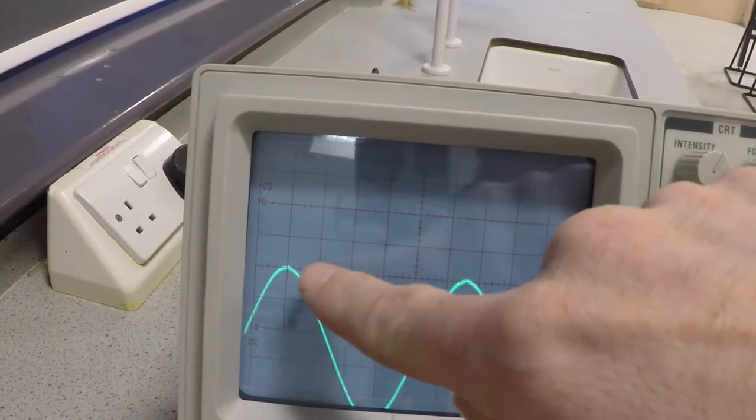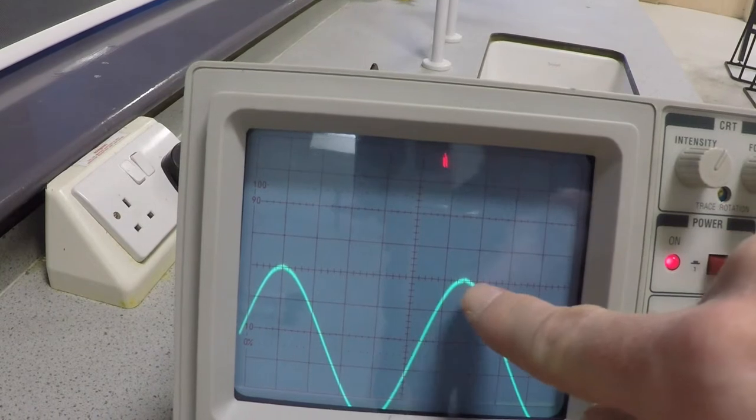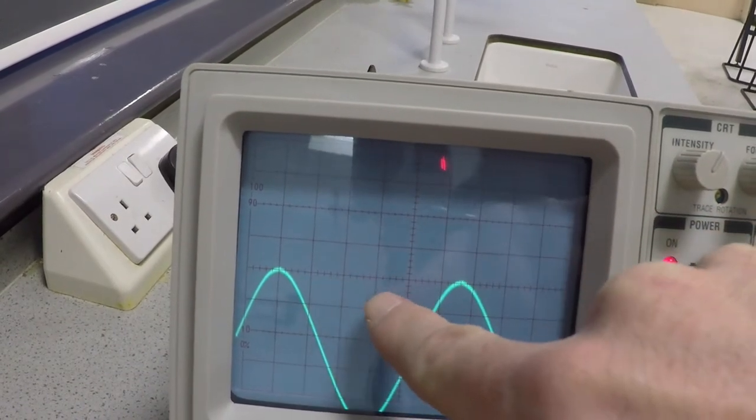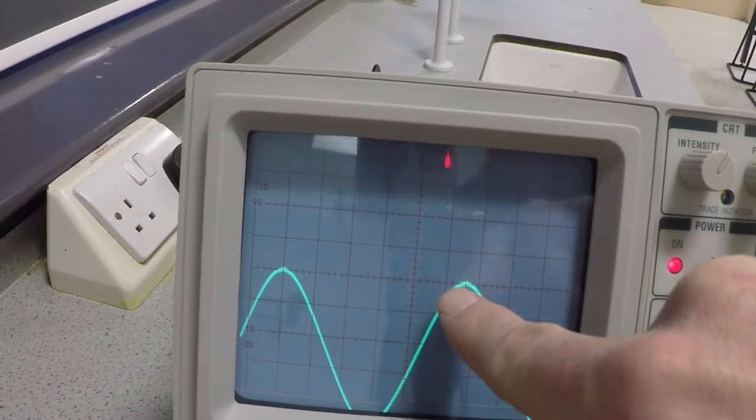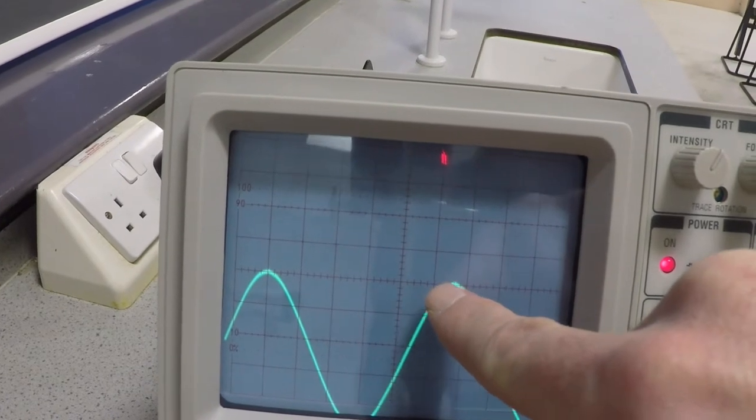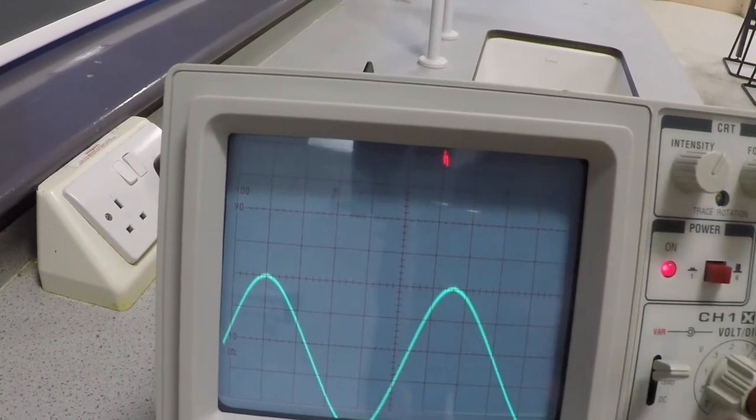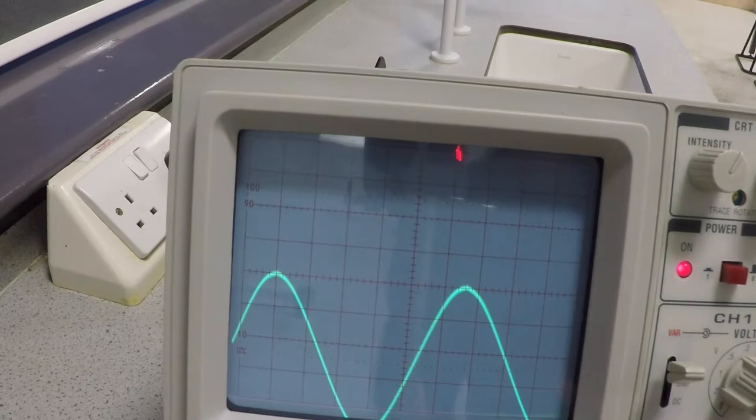Now we can measure how many centimeters across it is. So that's 1, 2, 3, 4, 5, 0.2, 0.4, 0.6. So that's 5.6 centimeters.